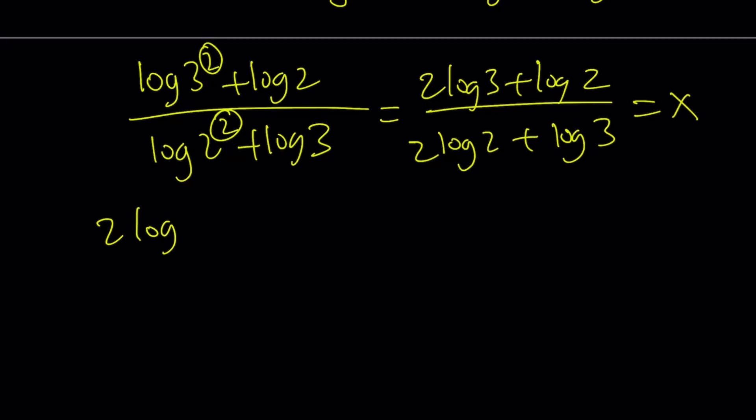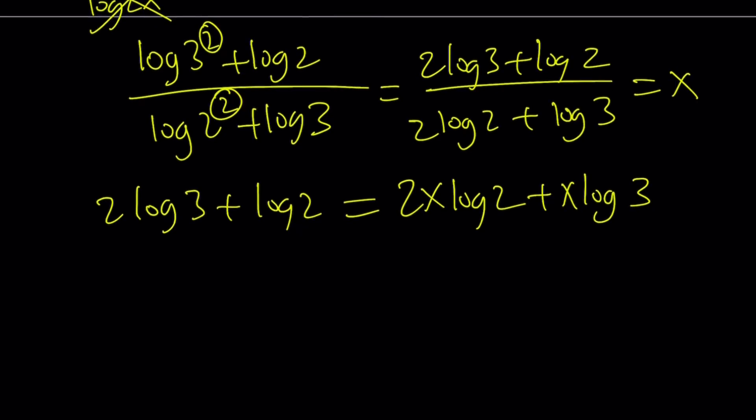We're going to get 2 log 3 plus log 2 equals, if you multiply everything by x, 2x log 2 plus x log 3. I want to write the x first because when I write it like log 2 times x, like log 2x, doesn't look right. So that's why I want to write the x first. Good.